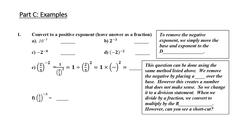Let's practice. Number one: convert to a positive exponent and leave your answer as a fraction. 10 to the negative 3 — place a 1 over it and apply the exponent to the denominator — gives 1 over 10 cubed. For b: b to the negative 3 — place a 1 over it and get rid of the negative in the denominator.